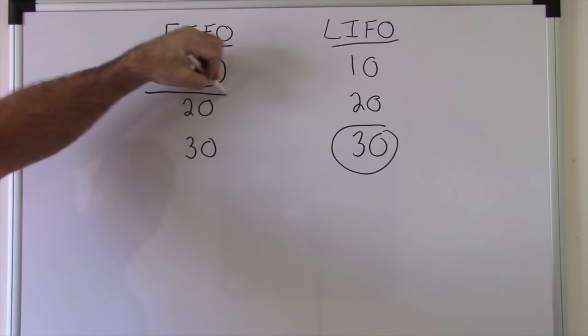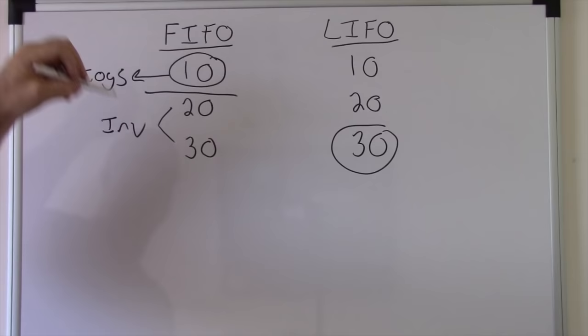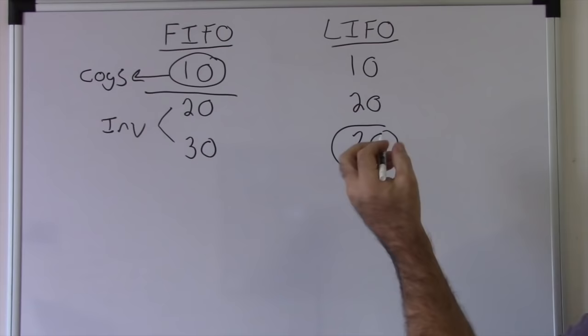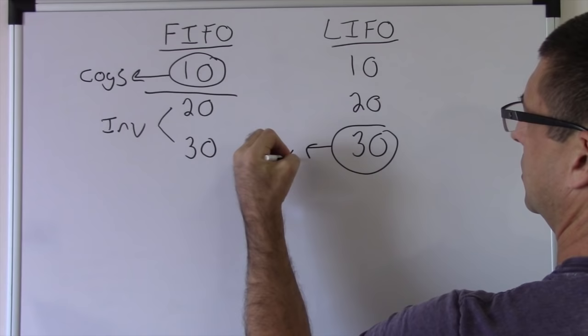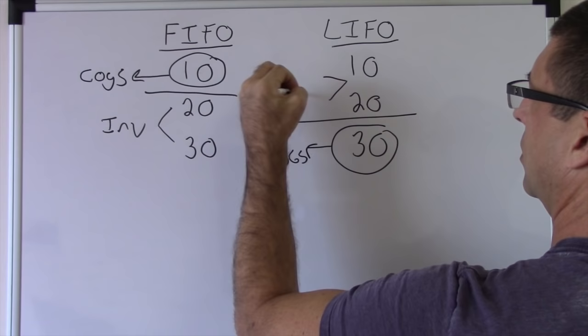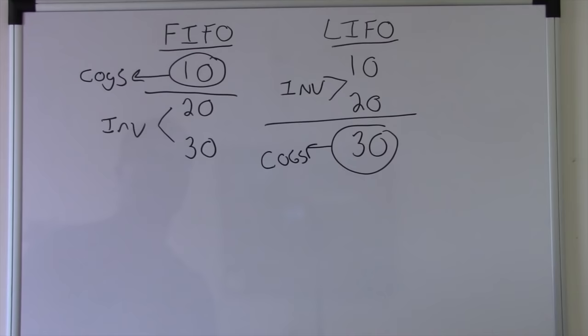That's COGS. That's inventory. Right here, this is going to be your cost of goods sold. That's COGS, cost of goods sold. And here's going to be your inventory.